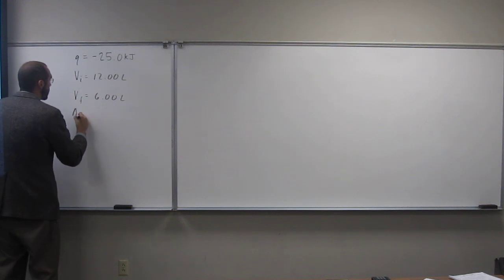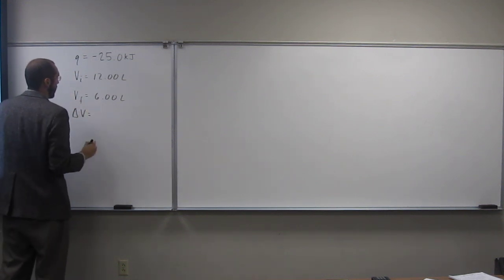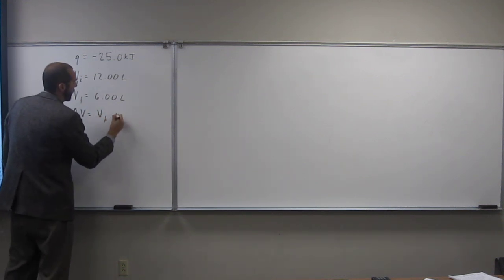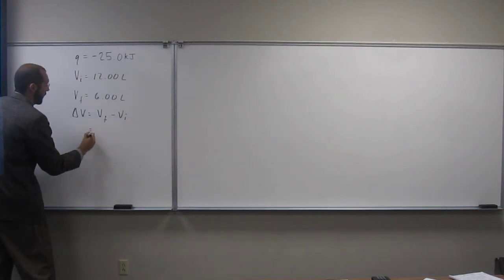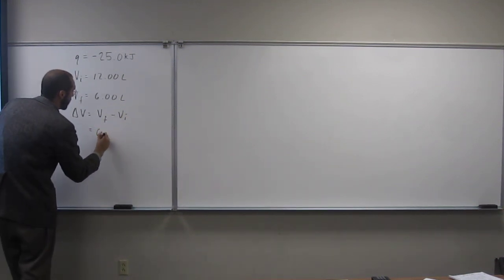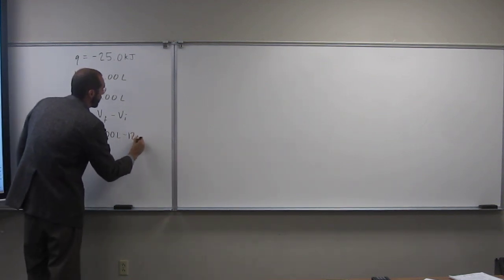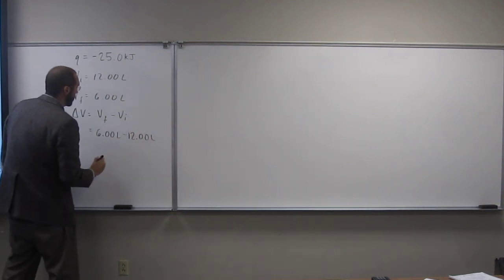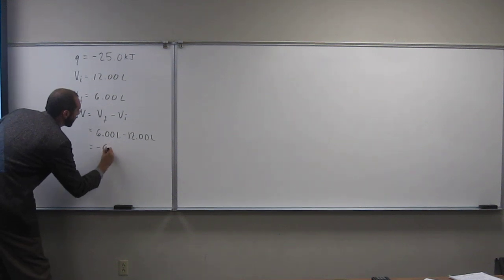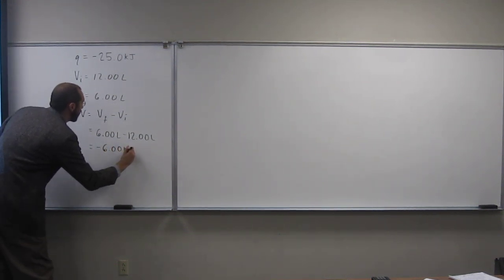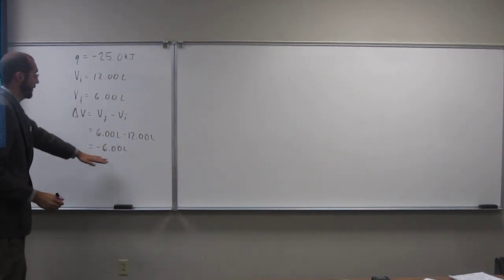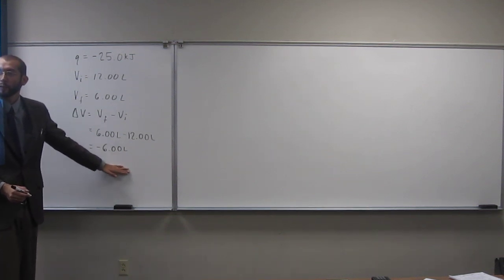So we can calculate our change in volume if we wanted to, right? Which is VF minus VI, or 6.00 liters minus 12.00 liters, which equals negative 6.00 liters. So this means it's decreasing in size by 6.00 liters.